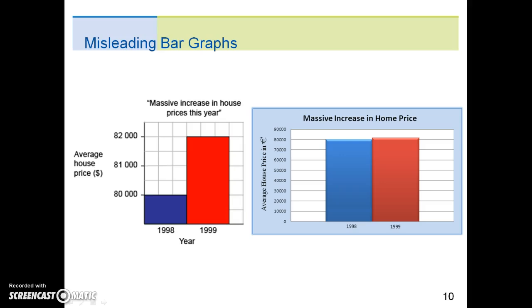Here is another example of a scale change on a graph for home prices. Notice that the graph on the left starts at $80,000 and the graph on the right starts at $0. The scale change makes the left graph look much more dramatic than the right graph for the same pieces of information.